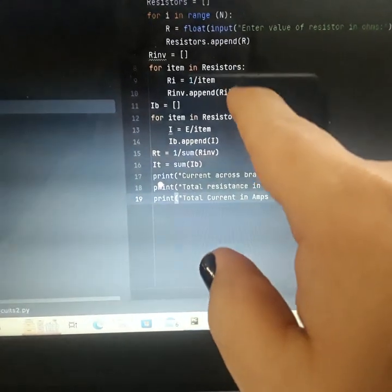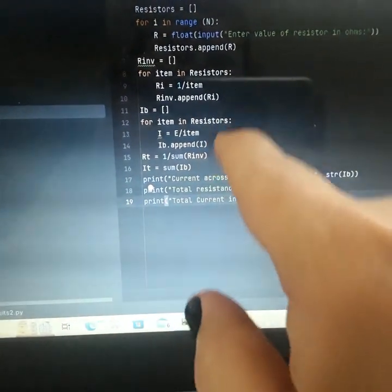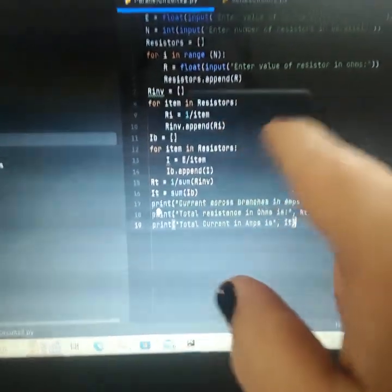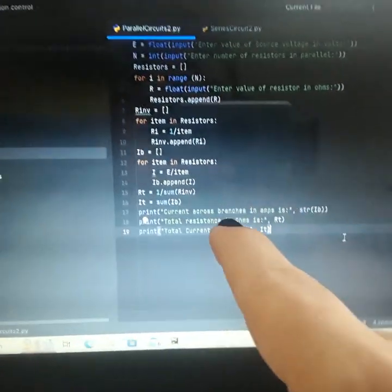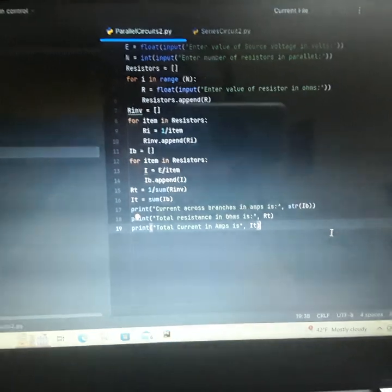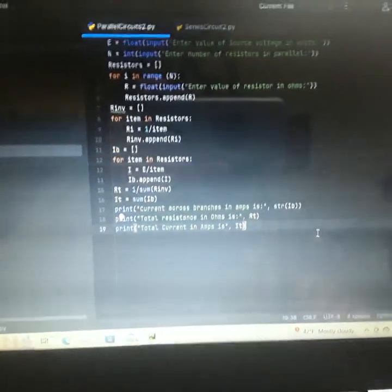And finally we calculate the total current which is the sum of the current branches, and that is a list too. So I'm using a list to create another list to create another list that I manipulate with the numbers, and it kind of works.